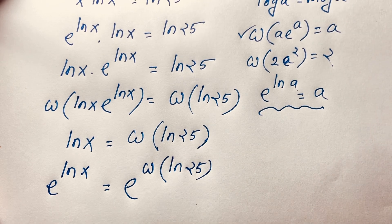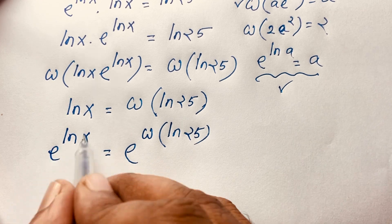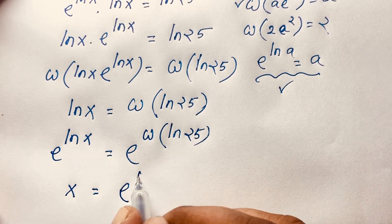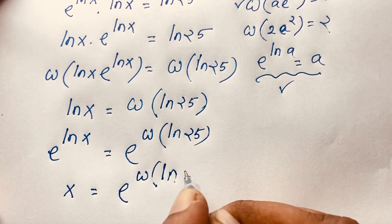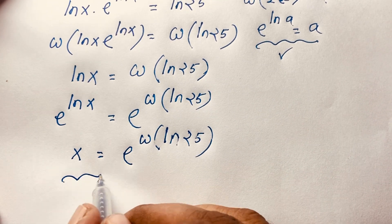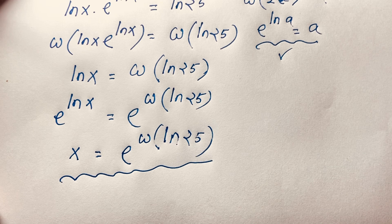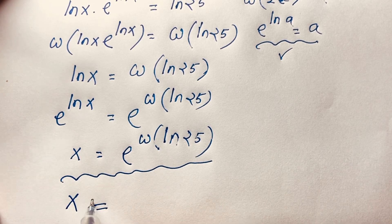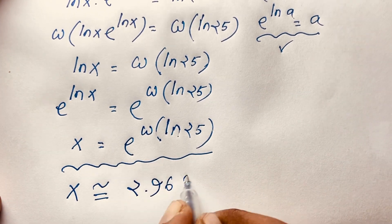According to the formula e to the power ln x equals x, we get x is equal to e to the power Lambert W of ln 25. Our final answer is x is equal to e to the power Lambert W of ln 25. If you use a calculator, you can find that x is approximately 2.963.